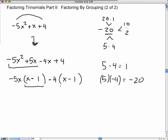Now, these two binomials are the same. So I can factor them out. What's left over? Negative 5x. And then take away 4. Perfect. So this trinomial can be factored out.